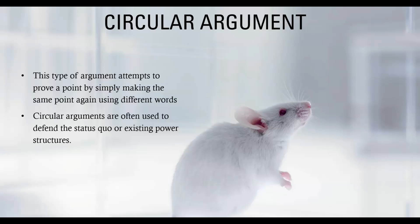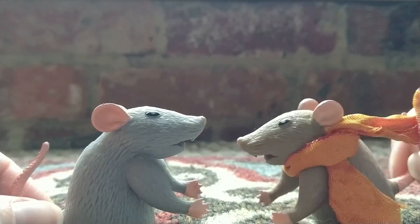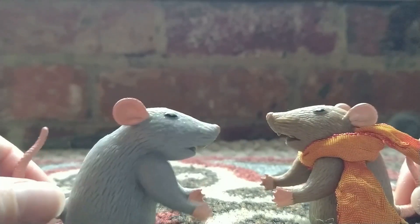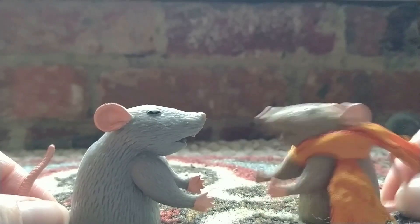The circular argument logical fallacy is a type of argument attempting to prove a point by simply making the same point again using different words. Circular arguments are often used to defend the status quo or existing power structures. Rats are the most intelligent animals. Yes, I guess that's true. It must be because we're so smart.